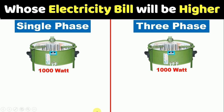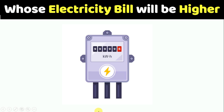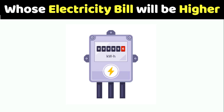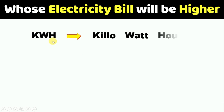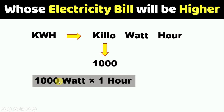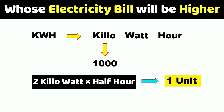For calculation, first let us understand how electricity bill is calculated. Electricity bill is generated according to the energy meter. Units shown in the energy meter are in kWh, which stands for kilowatt hour. 'Kilo' means 1000, so if we have equipment of 1000 watt and run it for one hour, the energy meter shows consumption of one unit. Similarly, if the load is 2 kilowatt, then after half an hour one unit of electricity is consumed. This is how the energy meter shows consumption of units.